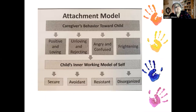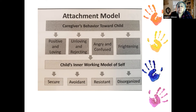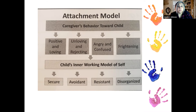Here is a quick breakdown of the attachment model. If the caregiver's behavior to the child is positive and loving, it creates a secure inner working model. If it's unloving and rejecting, there's avoidance. If they're angry and confused, it's resistant. And if they're frightened, it's disorganized.